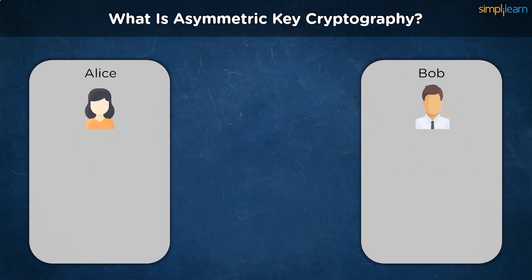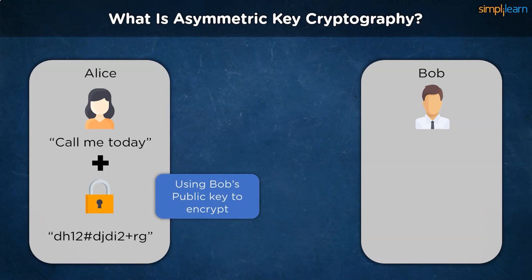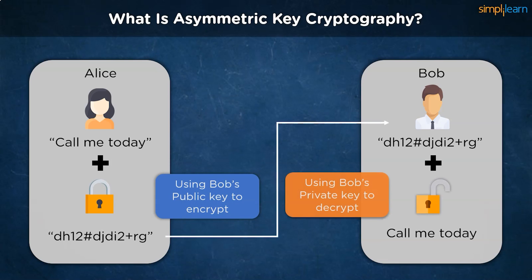In another example, if Alice wants to send a message to Bob — let's say it reads 'call me today' — she must use Bob's public key while encrypting the message. Upon receiving the cipher message, Bob can proceed to use his private key in order to decrypt the message, and hence complete security is attained during transmission without any need for sharing the key.